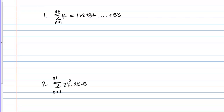Of course, I could do that by hand and get the answer, but the point of these sum formulas that we just looked at is to have a more efficient way of calculating large sums like these. Let me write down the relevant formula here. We just saw that the sum from 1 to N of K is N times N plus 1 over 2.